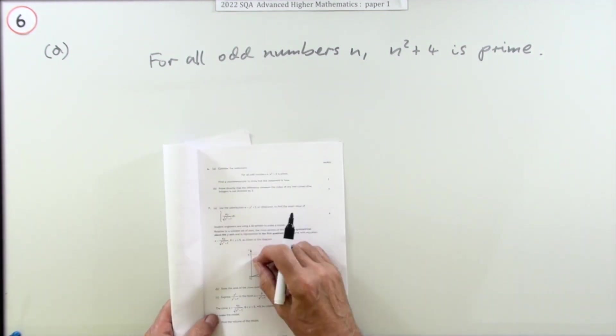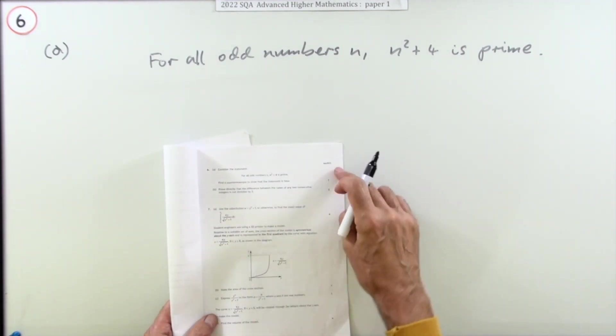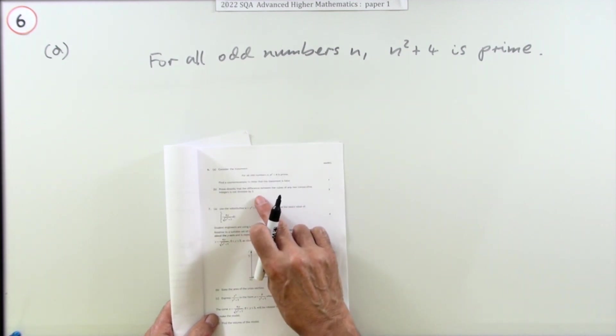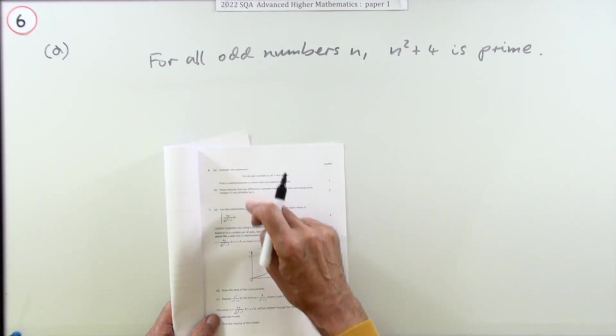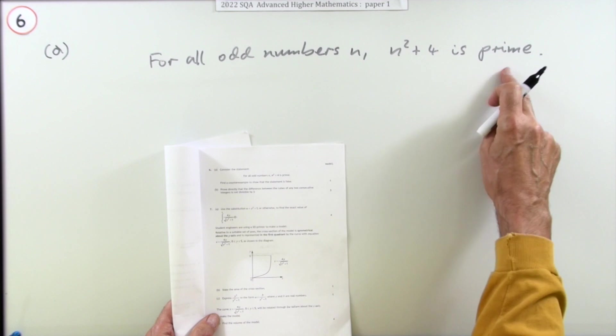Question 6 from the 2022 Advanced Higher paper one. A fairly straightforward proofs question, as the rest have been so far. Part A: Consider the statement 'for all odd numbers n, n squared plus four is prime.'